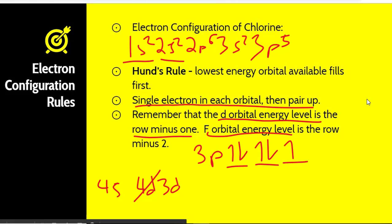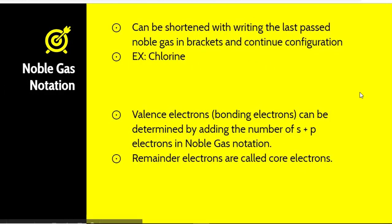The same concept applies to f. The f orbital energy level is n minus 2. So if we look at the first f block, you might think it would be 6f, but it is actually 4f. Again, that has to do with electron density pulling those electrons in, making that orbital smaller, and as a result it is closer to the fourth energy level than the sixth. Now, longer electron configurations can actually be shortened by writing the last passed noble gas in brackets and continuing the configuration.